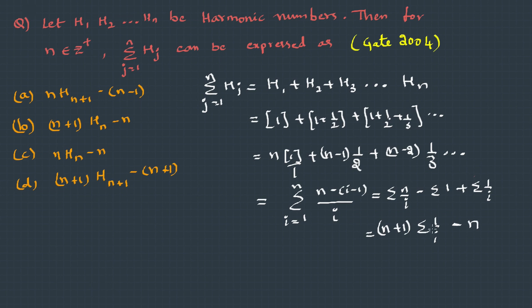But what is Sigma(1/i), which is 1 + 1/2 + 1/3 and so on? Nothing but the harmonic number. So (n+1) × Hn - n. Therefore, the answer is B.